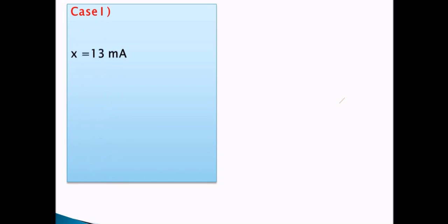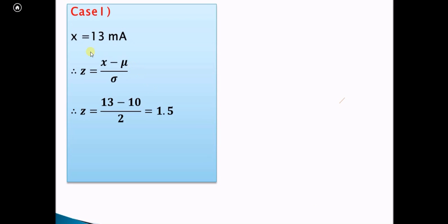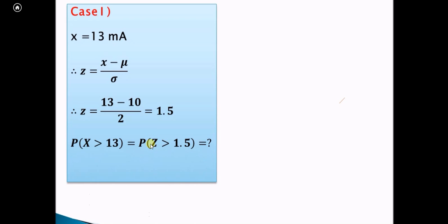Starting with the first case, we need to find P(X > 13 mA). The value of X is 13. Substituting X = 13, mean = 10, and standard deviation = 2 into the Z formula, we obtain Z = 1.5. So we need to find P(Z > 1.5), having converted the variable X into the standard normal variable Z.